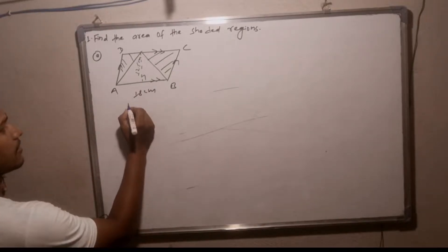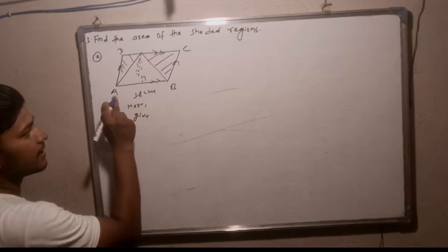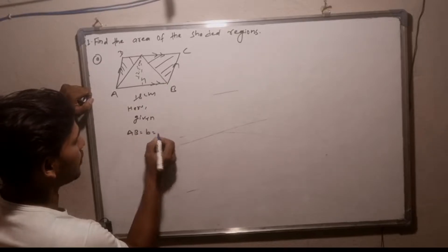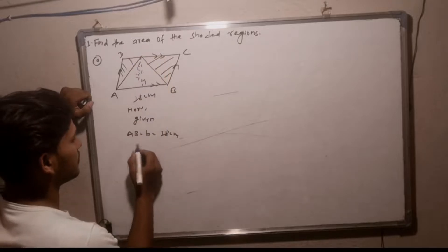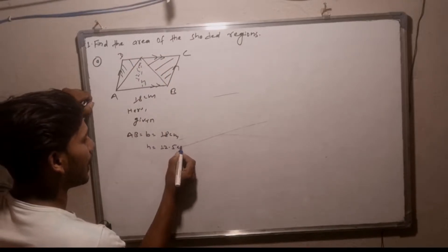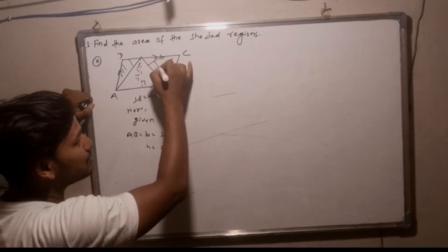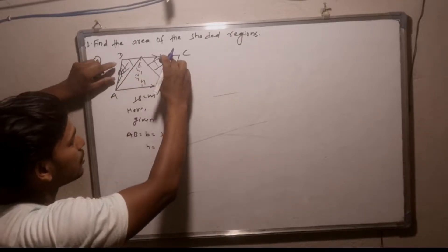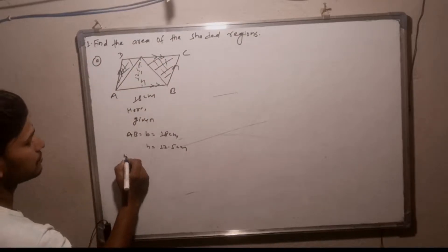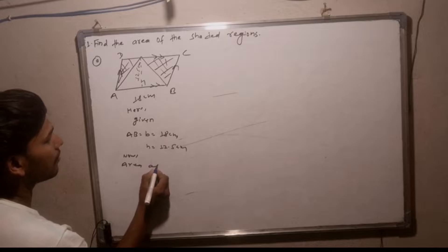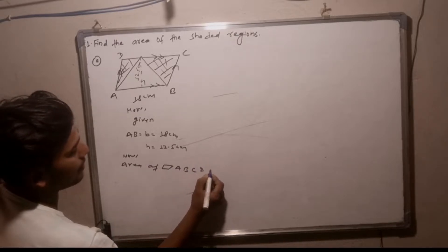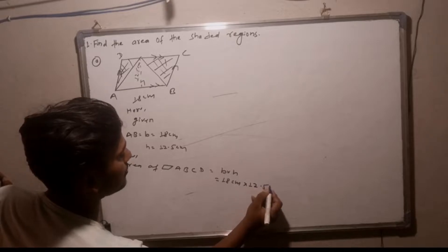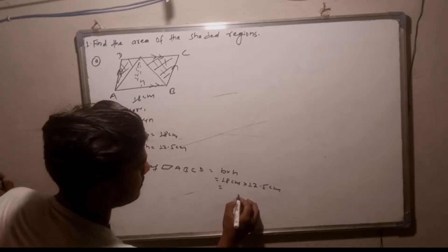Here, give a base value. A B K value base: A B is equal to B is equal to 18 cm and the height value of 12.5 cm. Base and height value. Here is the area of CD region, which is the area of ABCD. Base into height: 18 cm height 12.5 cm. The answer is cm².